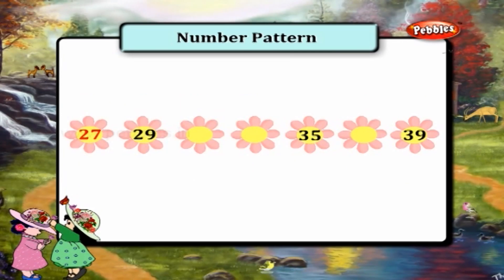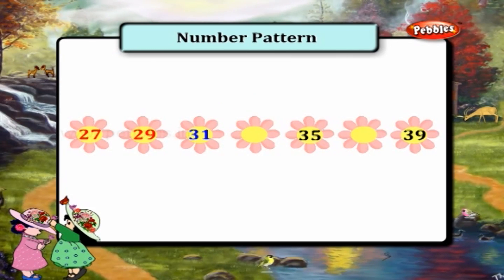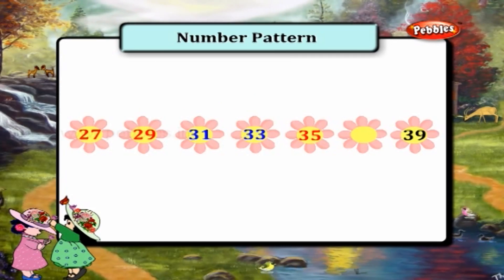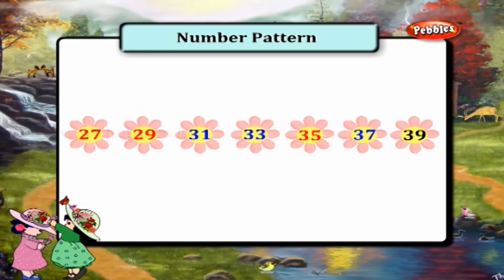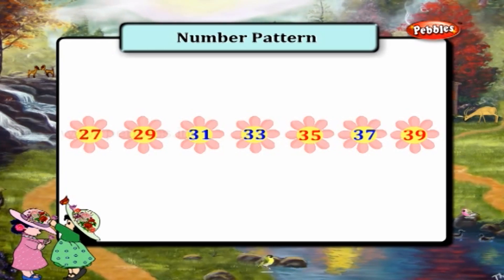27, 29, 31, 33, 35, 37, 39. This pattern skips one number in the ascending order.